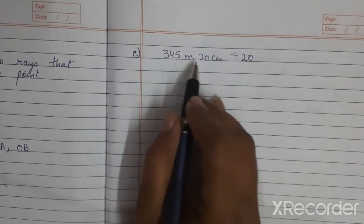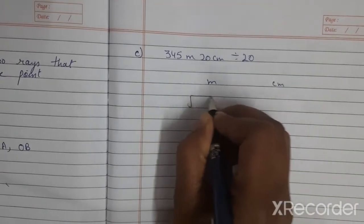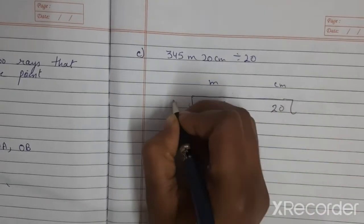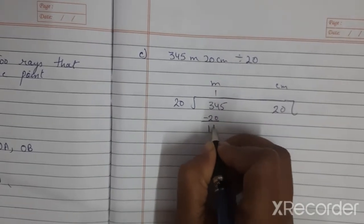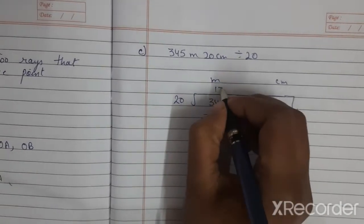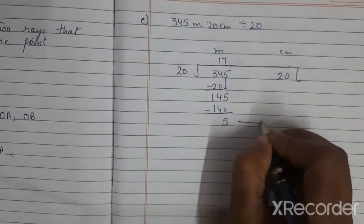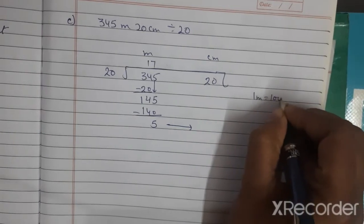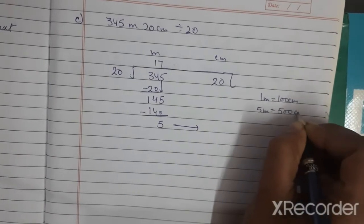Now Part C: 345 meter 20 cm divided by 20. Write meter and centimeter columns. 345 meter and 20 cm, divide by 20. 20 × 14 = 280, now 5 will come down giving 145. 20 × 7 = 140, subtract, remainder is 5 meter. Now we know 1 meter is equal to 100 centimeter.